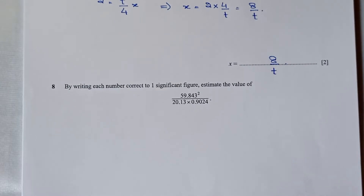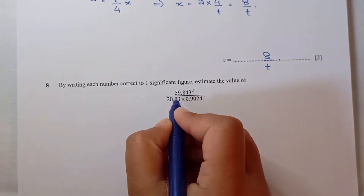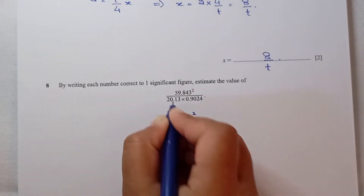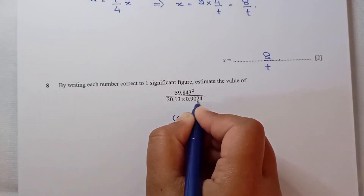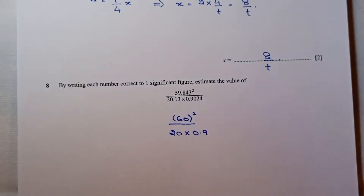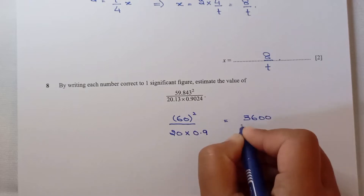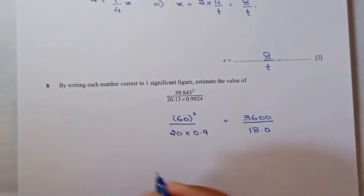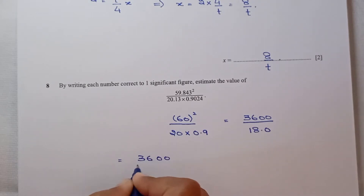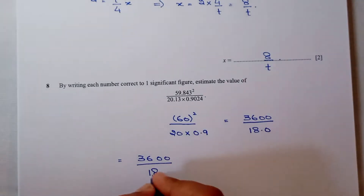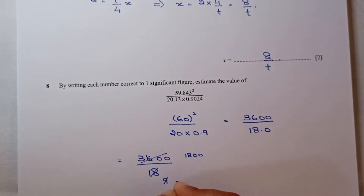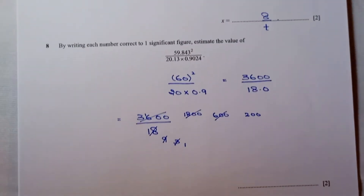Question number 8: by writing each number correct to 1 significant figure, estimate the value of the expression. 59 rounds to 60, so we have 60 squared in the numerator. 20 times 0.9 rounds to 0.9, giving approximately 18 in the denominator. So 60 squared equals 3600 over 18. Simplifying: 3600 divided by 18 gives 200.